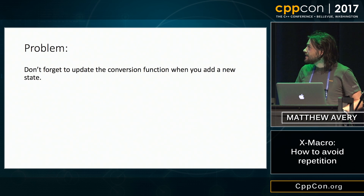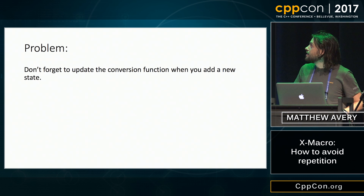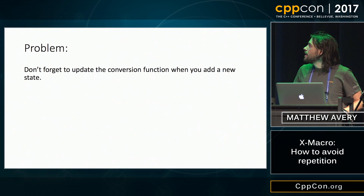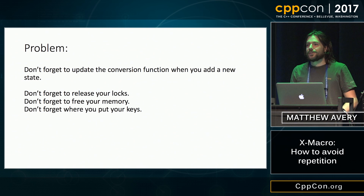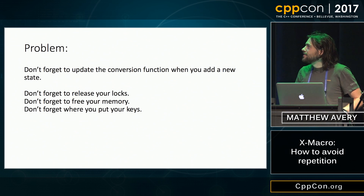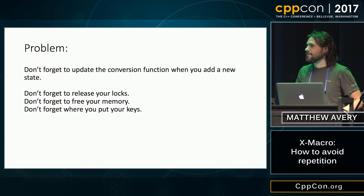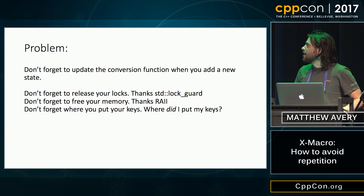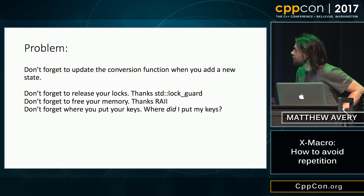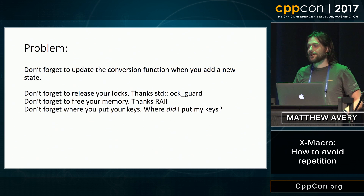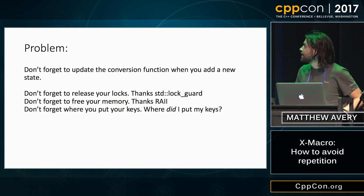The problem is that you can't forget to update your string conversion function when you update your enum list. And we know it's really hard to not forget things — like, you can say don't forget to release your locks, don't forget to free memory, or don't forget your keys, and that's great, but it's really hard to do. Thanks to std::lock_guard, thanks to constructors and destructors for RAII — and I still don't know, whenever I lose my keys, where I put them.